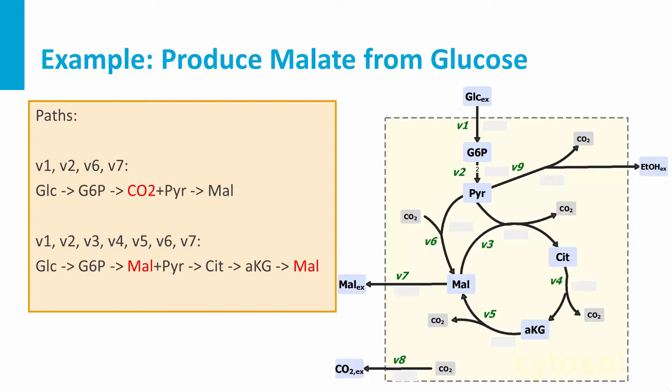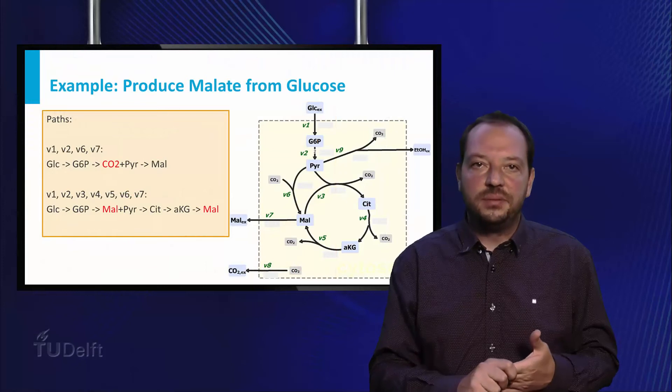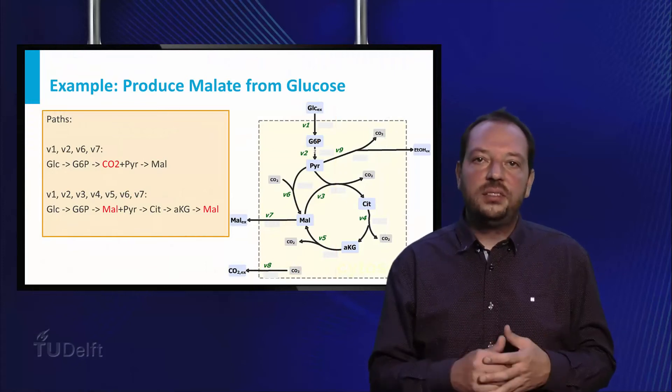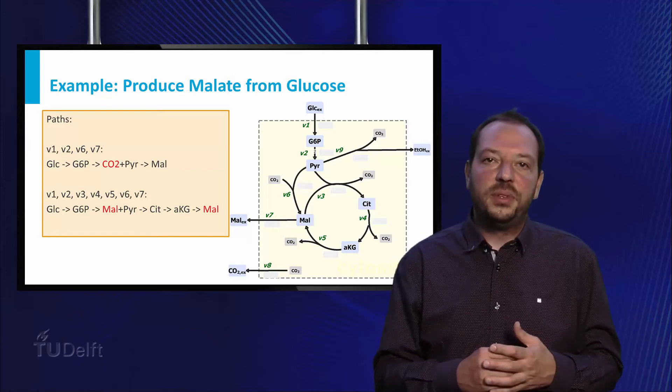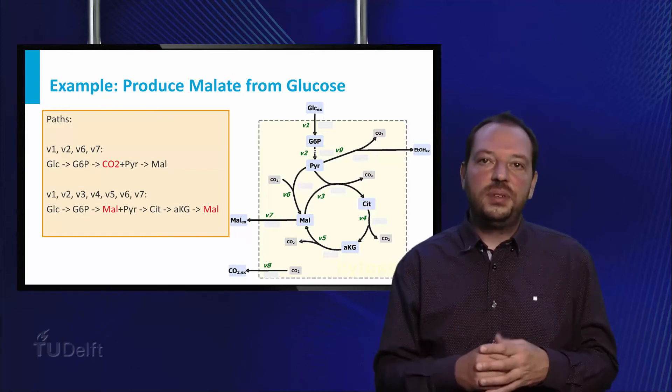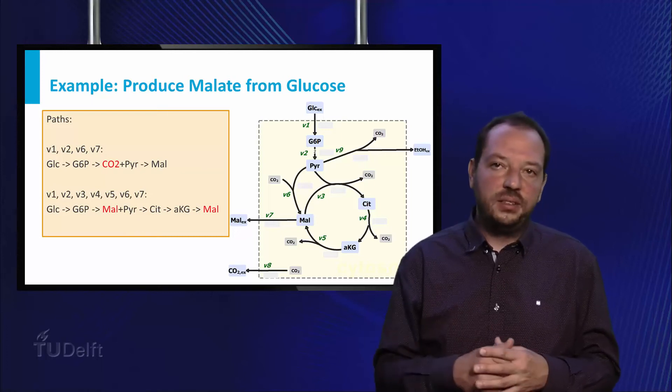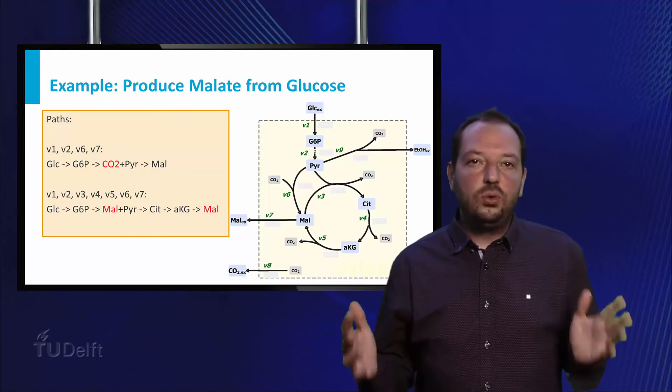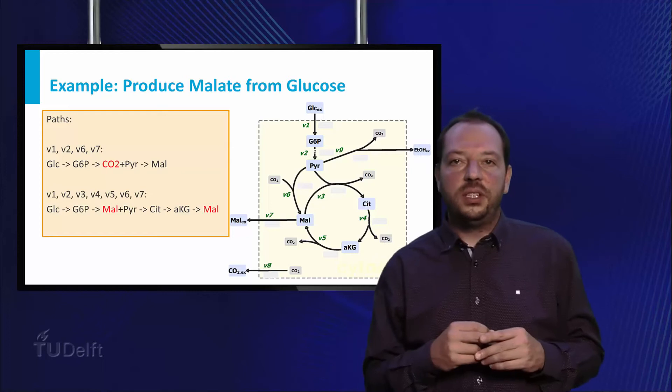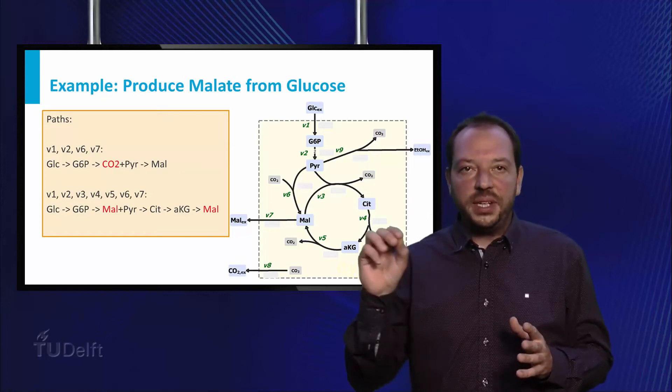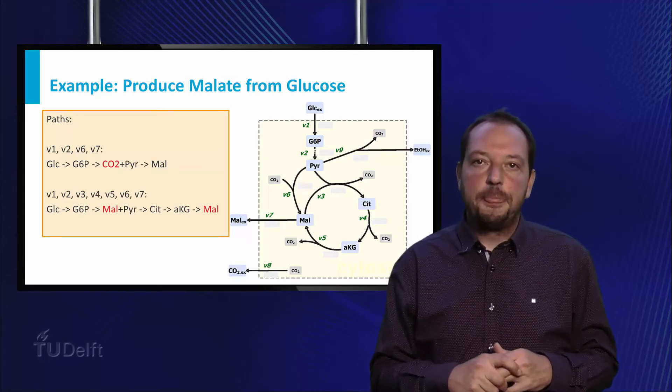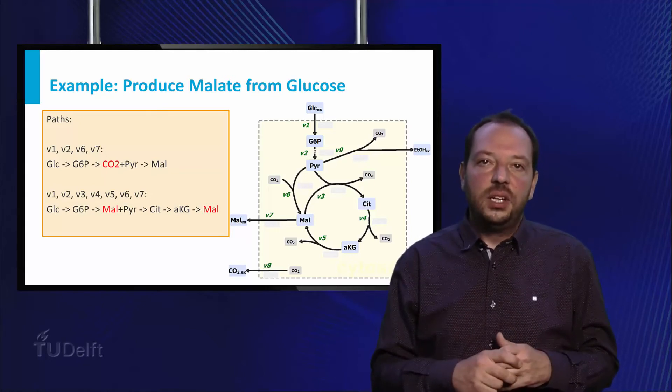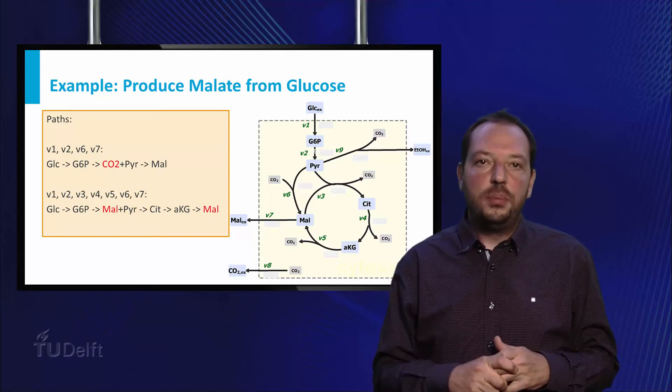Leaving as only possibility to take the first route: V1, V2, V6 and V7. Now please realize that this route requires CO2 for the step V6, and from the reactions V1, V2 or V7, we do not obtain CO2. We can see two possibilities to produce CO2. The cycle V3, V4, V5 will produce three CO2 from one pyruvate. Or we take V9, which will produce one CO2 per pyruvate.